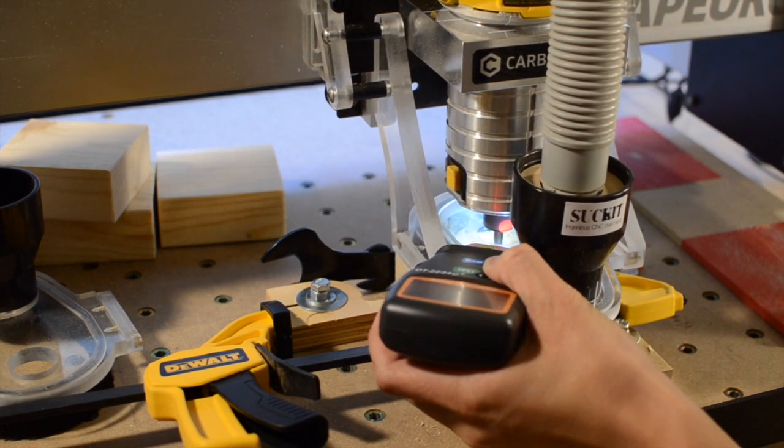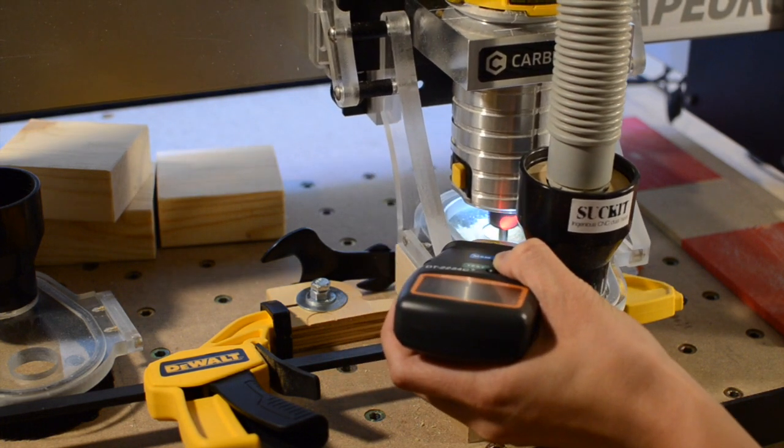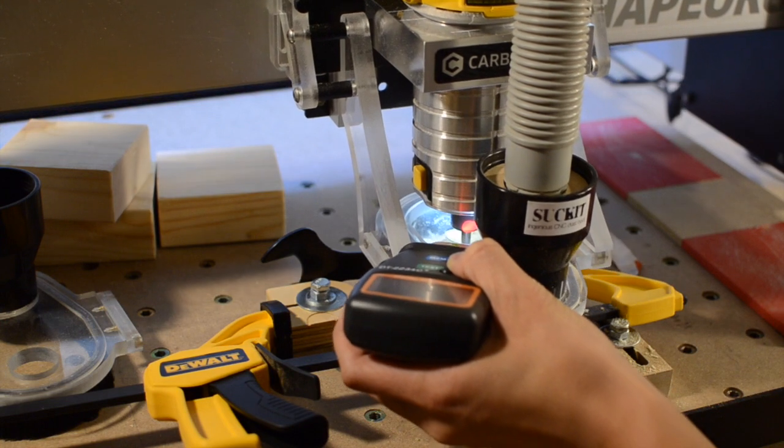The DEWALT generally stayed within about 150 RPM of its unloaded speed. Don't focus on the numbers too much since I was eyeballing the data. It's basically as good as the Makita.